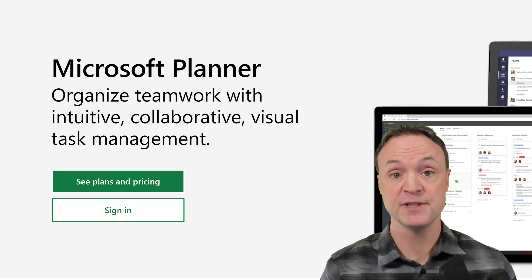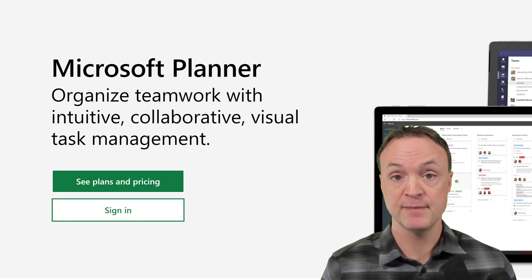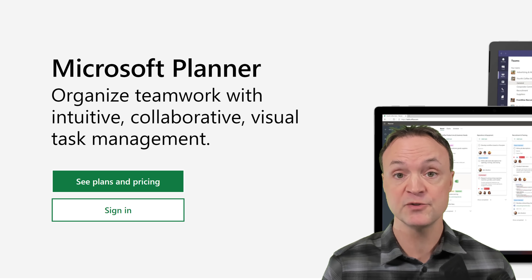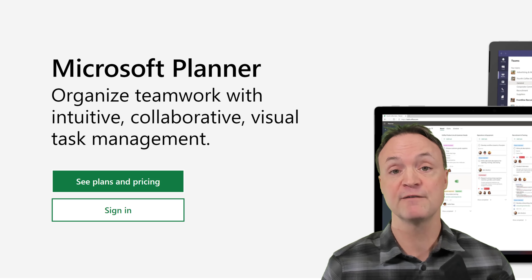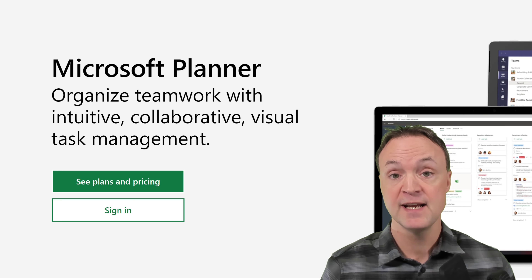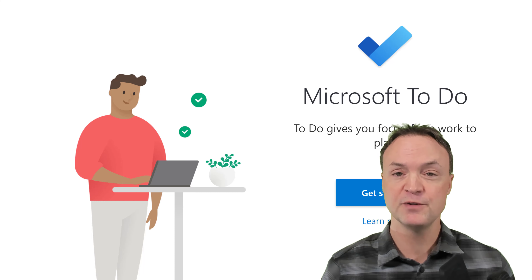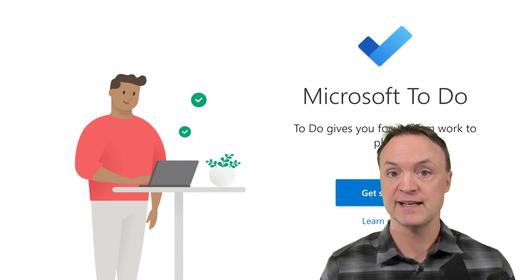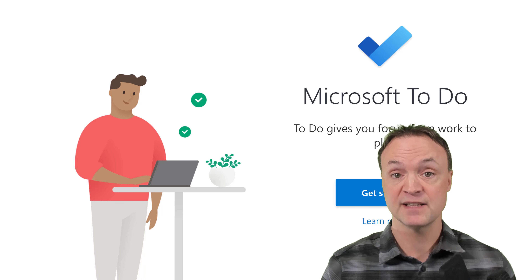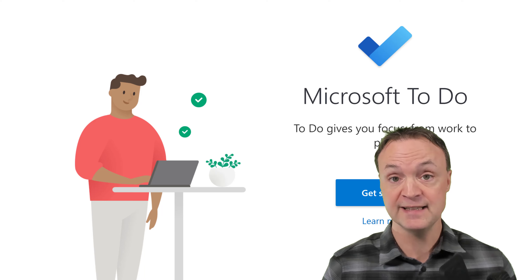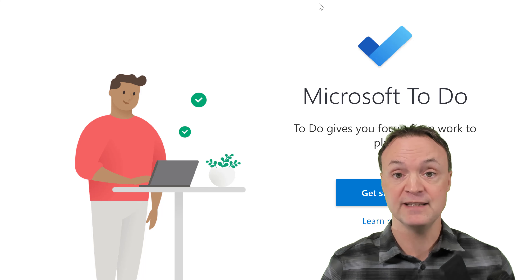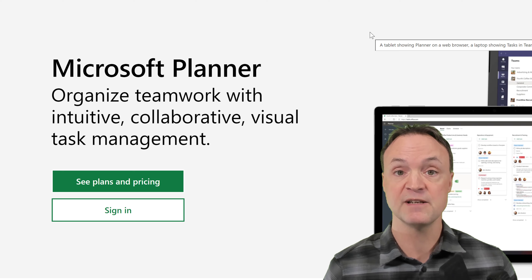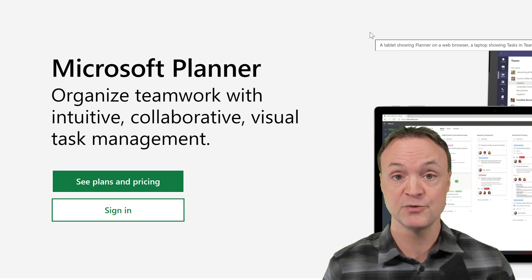Microsoft Planner is not a free app — you do need a Microsoft 365 business subscription. If you're part of an organization, whether a school or business, you'd probably have access to it. If you're looking for a free option from Microsoft, take a look at Microsoft To Do, which is more of a daily planner. You can share tasks inside it too, and it's free — all you need is a Microsoft account. I have a tutorial on that, so I'll put a link below and in the card above.